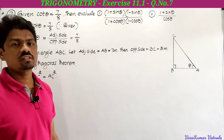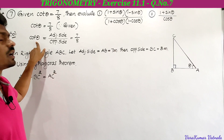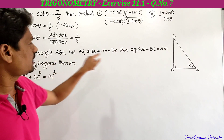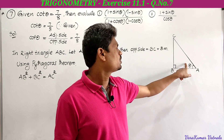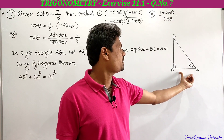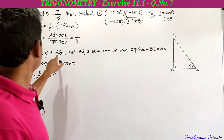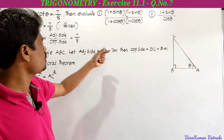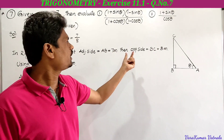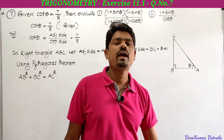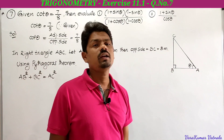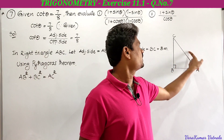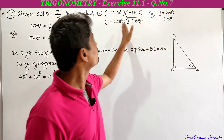Cot theta is equal to 7 by 8. We know cot theta equals adjacent side by opposite side, which is 7 by 8. In right angle triangle ABC, let angle A equal to theta. The adjacent side to theta is AB and the opposite side to theta is BC. Let AB equal to 7m and BC equal to 8m, where m is any positive number. Using Pythagoras theorem, we find AC, which gives us sin theta and cos theta.